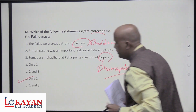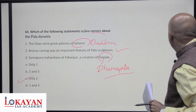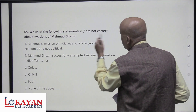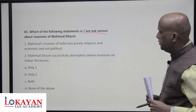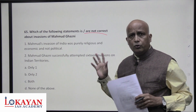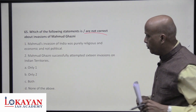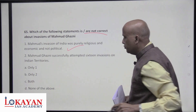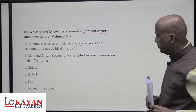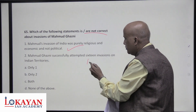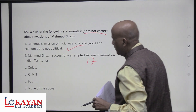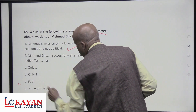Which statements about Muhammad of Ghazni's invasion of India are not correct? That his invasions were purely religious and economic and not political — not true; they were also political and economic. He conducted 17 invasions, not 16. Both statements are incorrect — answer is C.